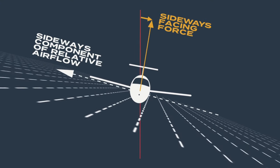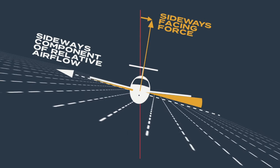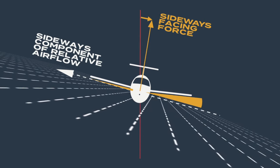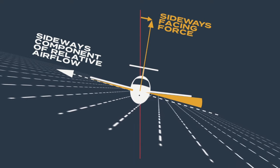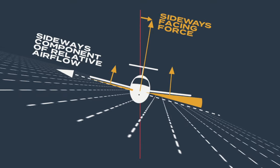Due to dihedral, the lower wing meets the upcoming relative airflow at a greater angle of attack than the upper wing. Consequently, the lower wing produces more lift and helps the aeroplane roll back to its original position.